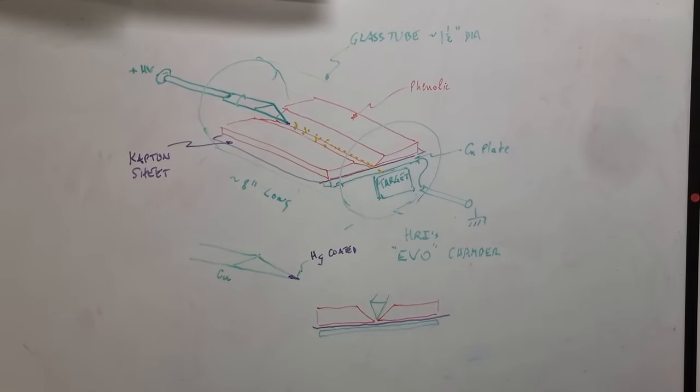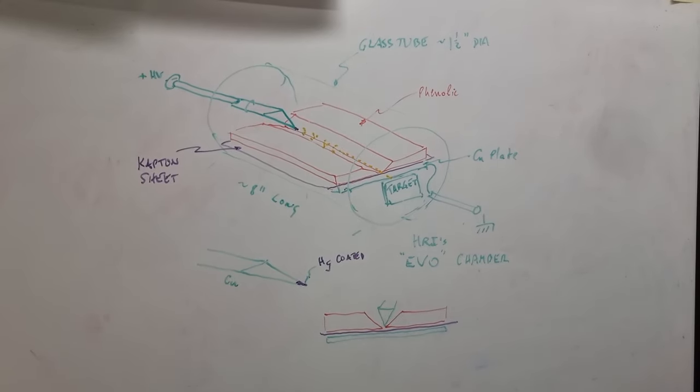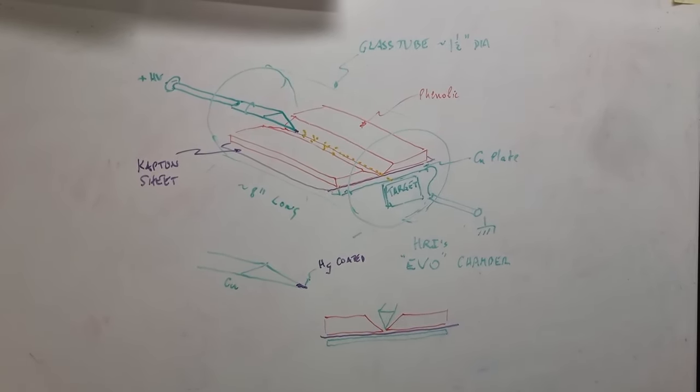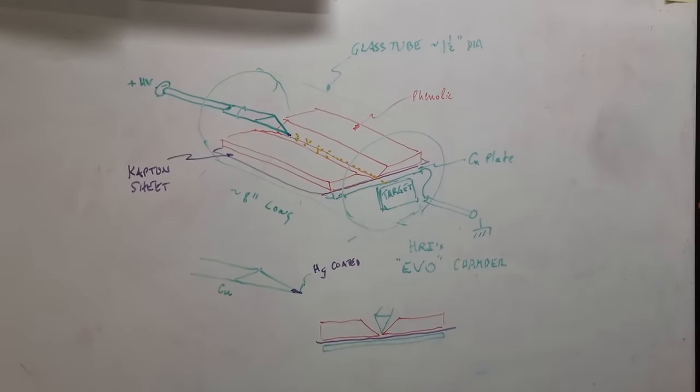Hi, my name is Bob Grignot and I'm a volunteer with the Martin Fleischmann Memorial Project and I'm here with George Hathaway of Hathaway Research International. He has drawn a diagram here on the whiteboard and this is of what, George?